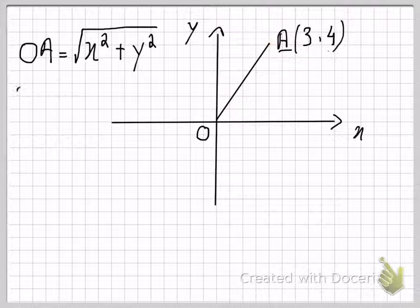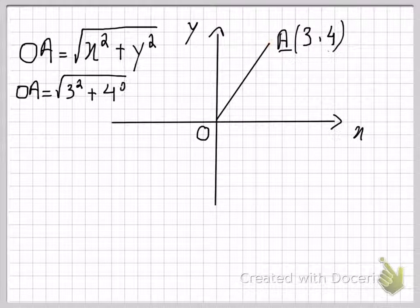So that will simply be done by using the formula. OA will be equal to the square root of 3 square plus 4 square.